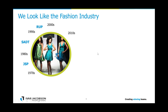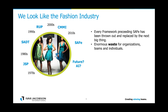In the 90s, we had RUP — the Rational Unified Process — which was the most popular framework at that time, adopted by all the big companies. Basically, it died. Then we had CMMI, which had to be adopted by all big companies — CMMI certified, level five, and so on. It died. Now we have the most popular framework today, SAFe — most popular ever. What's the future? We don't know. One thing we probably all know is that AI will play a significant role. Every framework preceding SAFe has been thrown out and replaced by the next big thing. It's enormous waste for organizations, teams, and individuals.